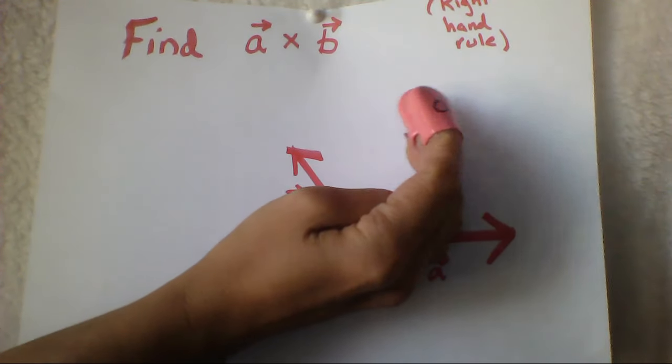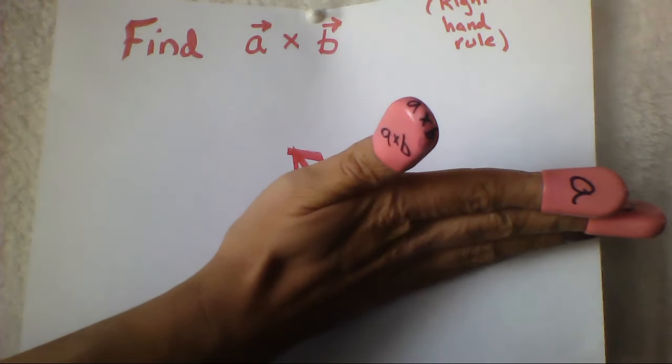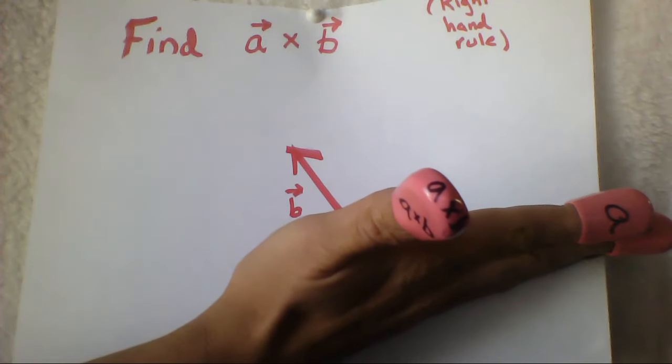So we've got that curl action going on. The direction that your thumb is pointing in, that is the direction of the cross product vector.